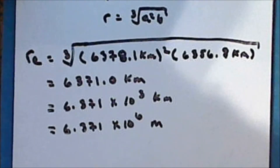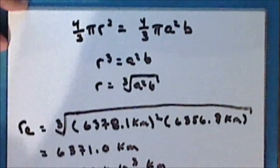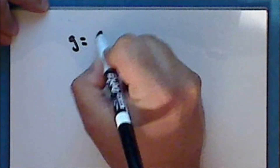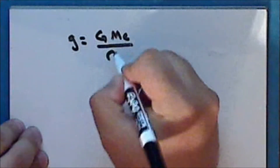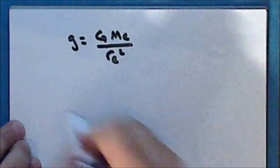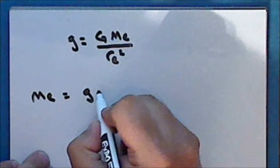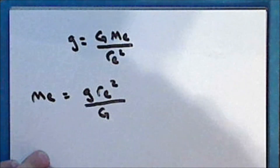Now that we know the mean volumetric radius of the Earth, we can use this value to calculate the mass of the Earth. Recall that the acceleration due to gravity near the surface of the Earth is the universal gravitational constant times the mass of the Earth divided by the radius of the Earth squared. So the mass of the Earth is the acceleration due to gravity near the surface of the Earth times the radius of the Earth squared divided by the universal gravitational constant.